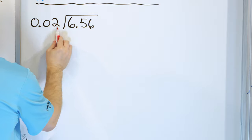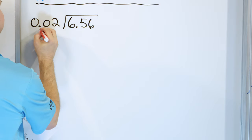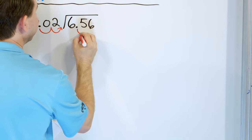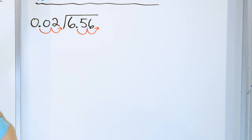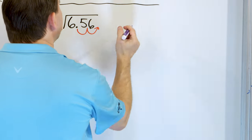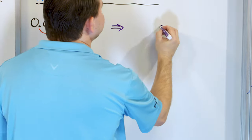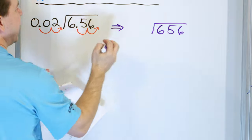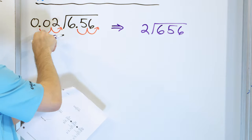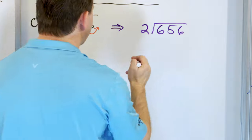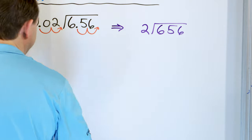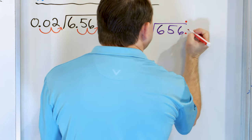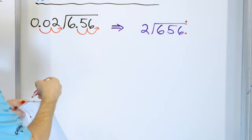On the outside I have two digits after the decimal. I want to move this decimal two positions to get a whole number. That means to keep it balanced, I have to move two positions on the inside also. So really I'm going to solve the related problem of 656 divided by 2. I move the decimal — I only have two on the outside, and the leading zeros you can throw away once you move the decimal.